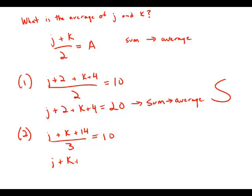This means that j plus k plus 14 equals 30. And again, I could solve this for the sum of j and k. Once I have the sum, I could find the average. So this statement by itself is also sufficient.